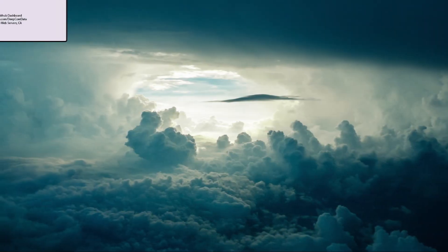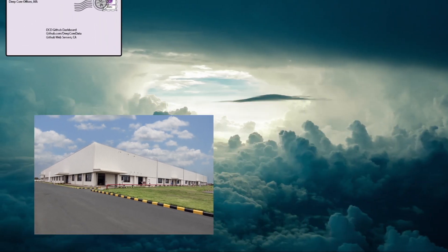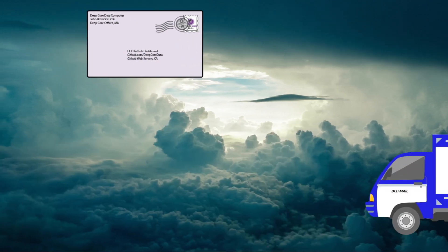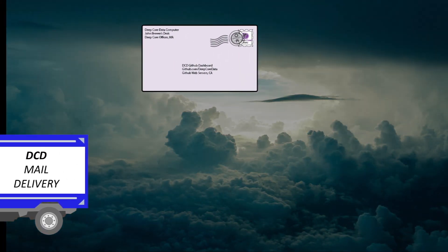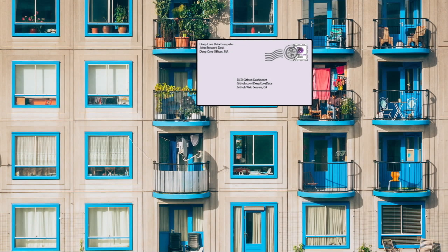Using our mail analogy, the letter goes from the distribution center to the local post office, is handed off to the carrier, and then delivered to the apartment complex, and finally the corresponding apartment. So let's go into detail.